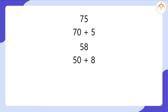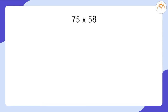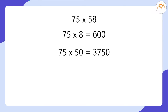You know that these are called the expanded forms of these numbers. Now let us see how we do it for 75 multiplied by 58. It means we are adding 75 eight times and again 50 times more. That means we can multiply 75 by 8 and then 75 by 50, and add these two answers.